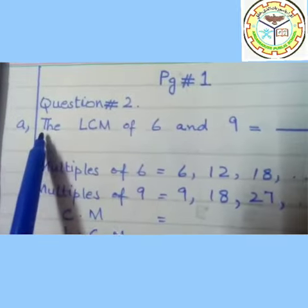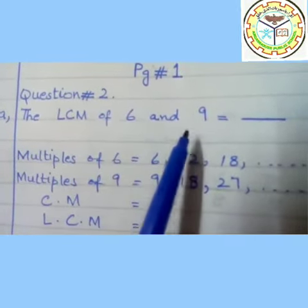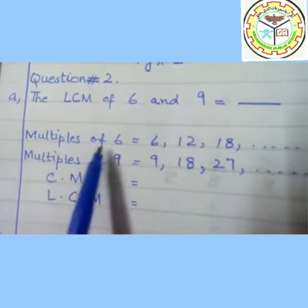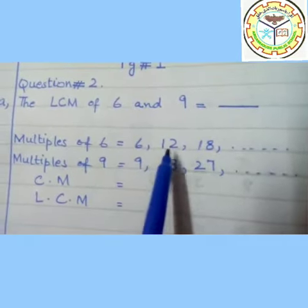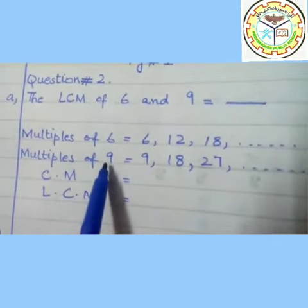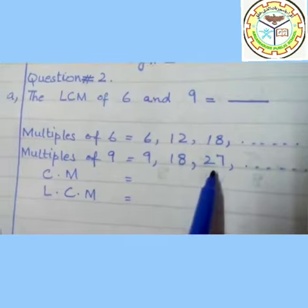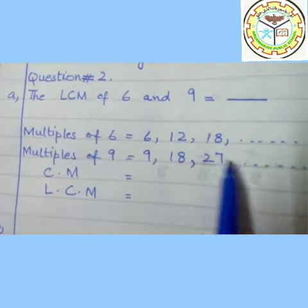Dear students, we solve here. This is question number 2 part A: the LCM of 6 and 9. Multiples of 6 are 6, 12, 18. And multiples of 9 are 9, 18, and 27. These are the multiples and they are going onwards.